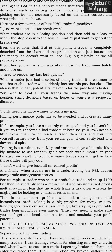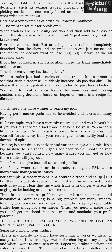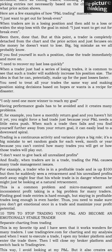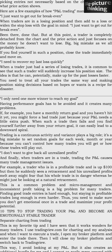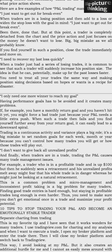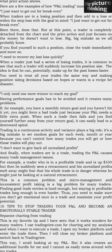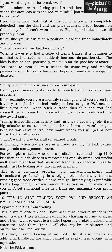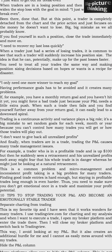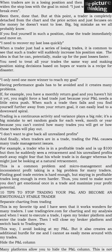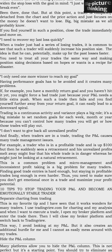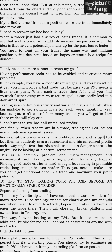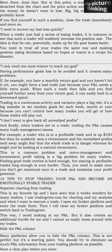The third mistake: 'I only need one more winner to reach my goal.' Having performance goals creates many problems. If you have a monthly return goal and haven't hit it yet, you might force a bad trade just because your P&L needs a push. When that trade fails, it can easily lead to a downward spiral. Trading is a continuous activity where variance plays a big role — setting random goals for each week, month, or year is a mistake.